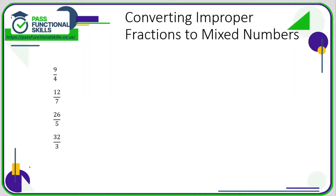Let's take a look at improper fractions and mixed numbers. On the slide here we have some improper fractions, or top-heavy fractions, where the number on the top is bigger than the number on the bottom. That means these fractions have a value which is greater than one. Now, the line in a fraction means divide.